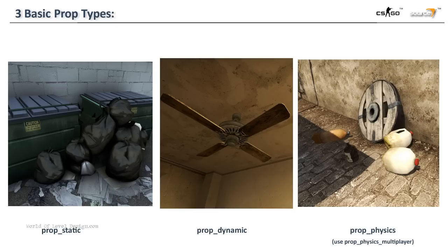Since we are dealing with Counter-Strike Global Offensive, you will want to use prop physics multiplayer to insert physics props into your map. The most common one you will use is prop static — it is the least expensive to render. Prop dynamic is more expensive than prop static but less expensive than prop physics. Prop physics are the most expensive because the position of each prop physics has to be calculated, which can hurt your map's performance especially for multiplayer.